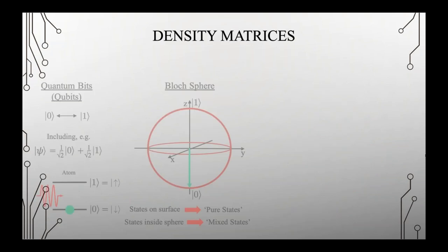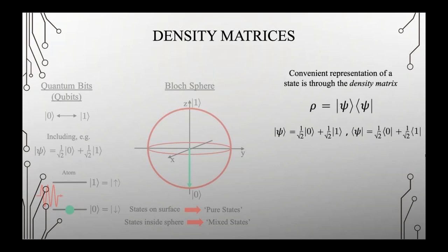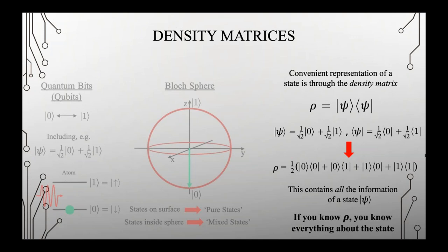A very useful way to represent your state is through the density matrix, normally symbolized by rho. If you know rho, it contains all the information about your state psi — rho is really what you want to know about the state of your quantum system. This is what we'll be discussing later in the talk with this protocol, using entropy and entanglement to find out information about rho.